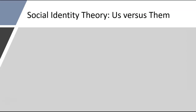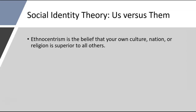One theory in this area that's very important to understand — it's a theory more at home in sociology but also very popular among social psychologists — is called social identity theory. Basically, it's the idea that our social groups become projections of our own identity system. The groups to which you belong start to represent ways of communicating who you are to other people.